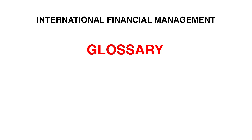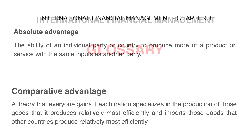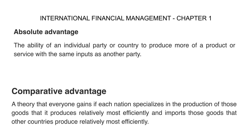In this video, I'm going to make you familiar with the terms used in Chapter 1 of the Global Finance course. Absolute advantage is the ability of an individual, party, or country to produce more of a product or service with the same inputs as another party. Comparative advantage is a theory that everyone gains if each nation specializes in production of those goods it produces relatively most efficiently and imports those goods that other countries produce relatively most efficiently.